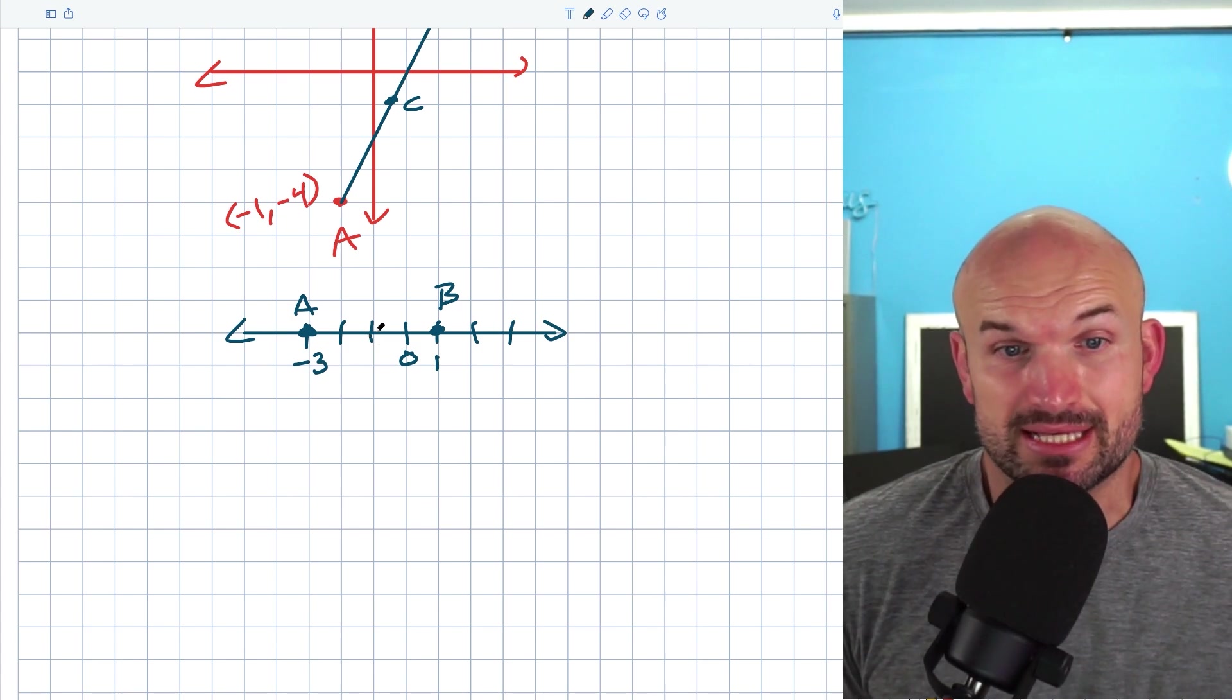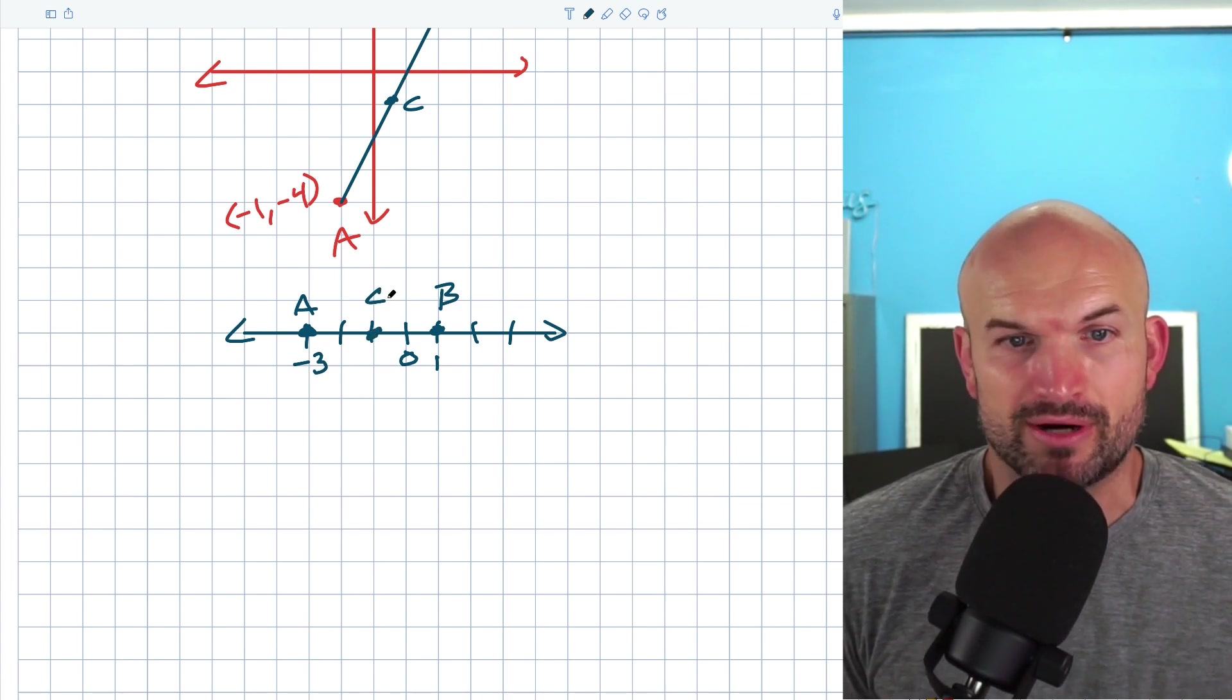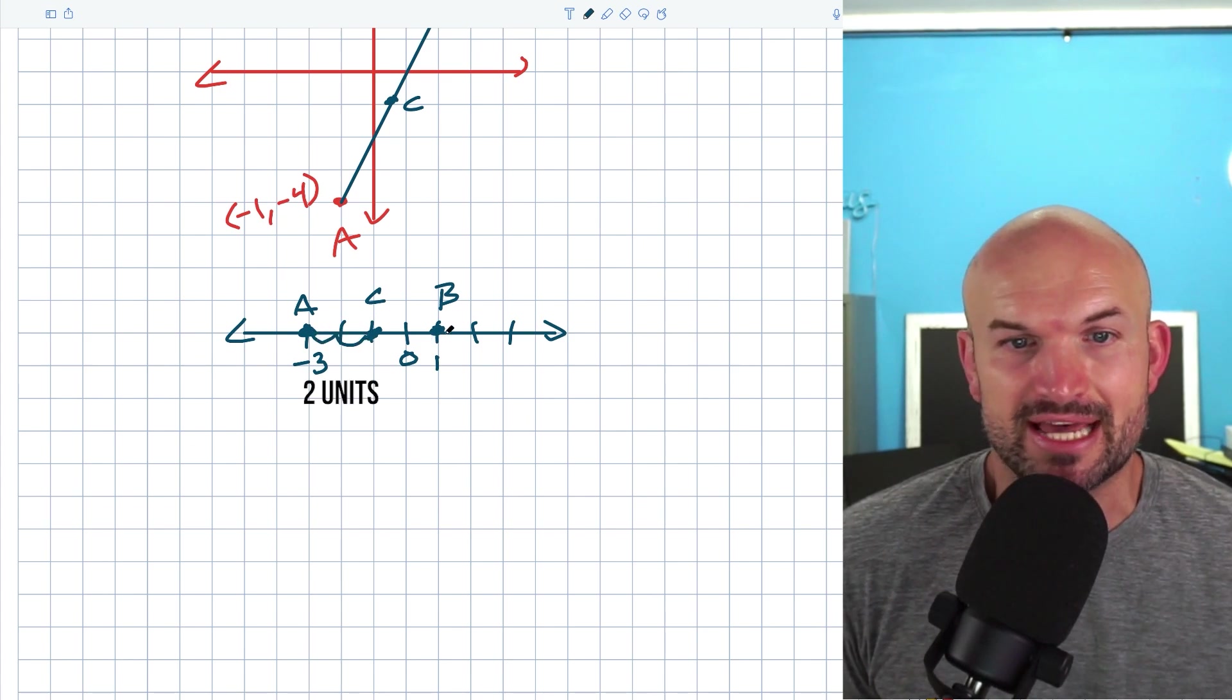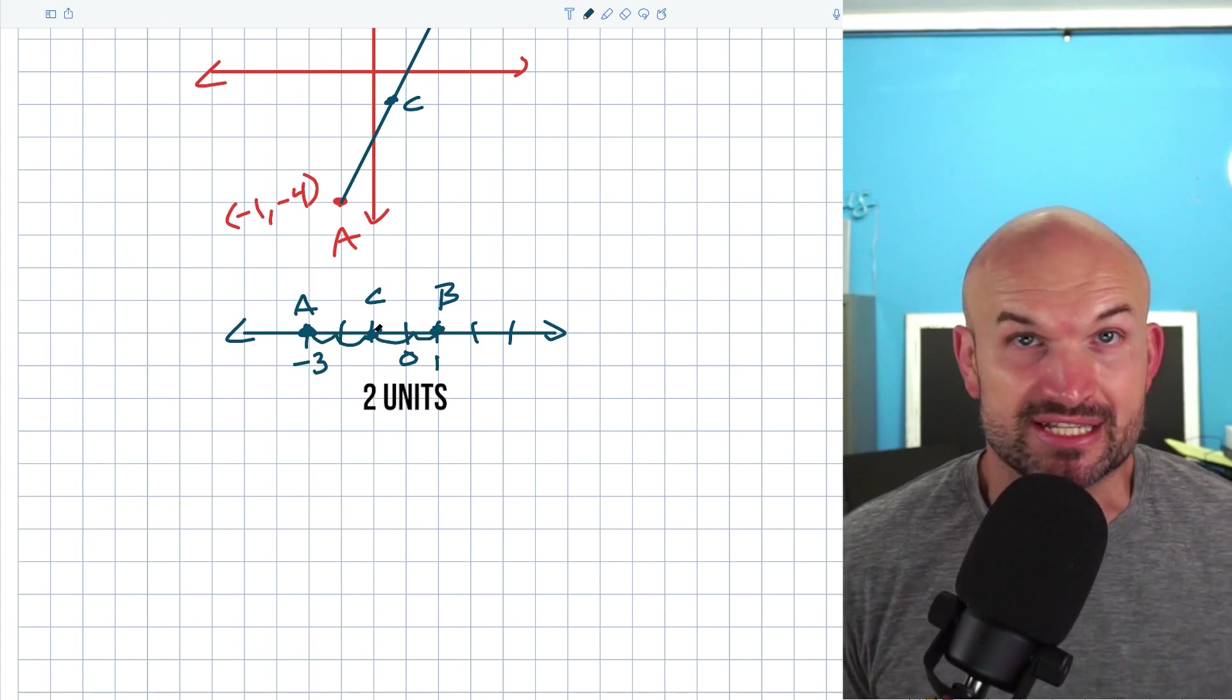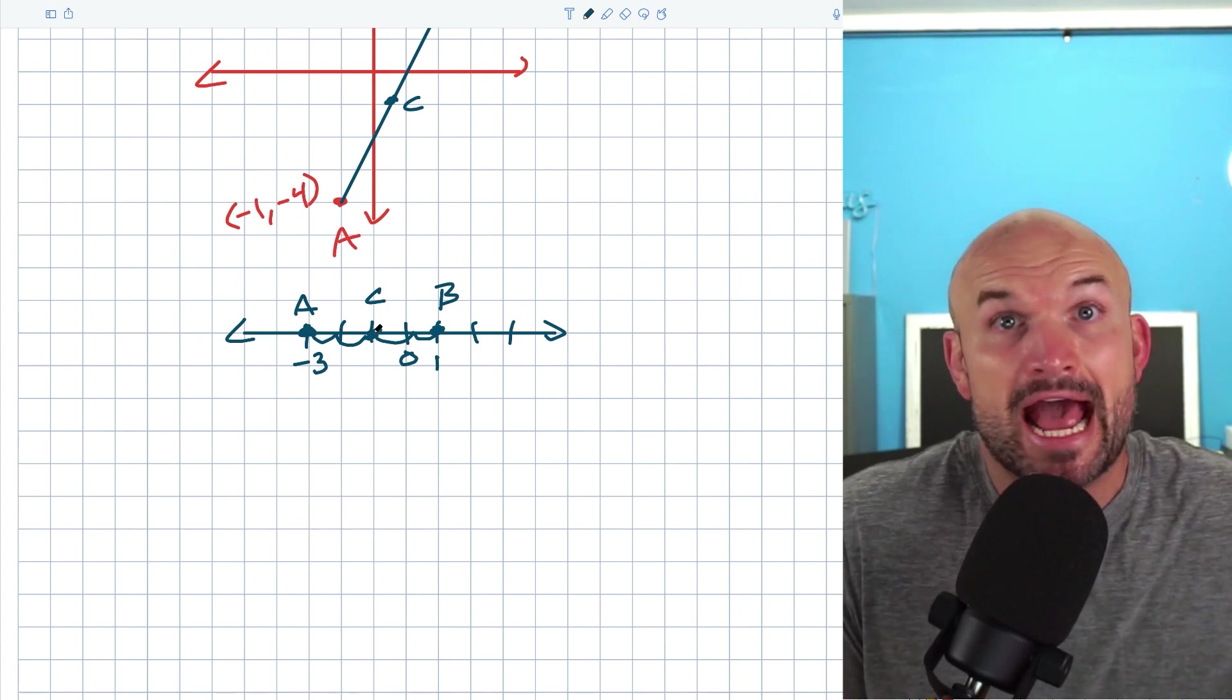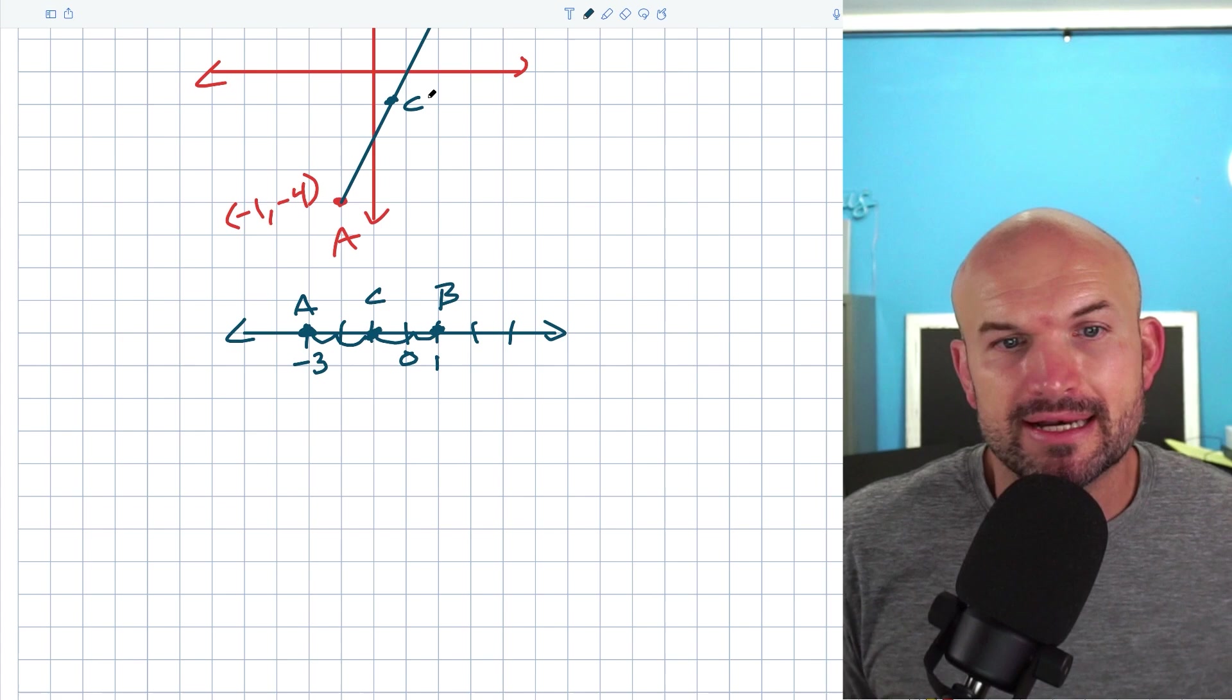Now basically, what we did here is we just want to find the point that's in the middle. Now, you could probably say, oh, that's the point right here. And the reason why it's in the middle is because the distance from A to C is two units, and the distance from B to C is going to be two units. It doesn't matter if it's positive or negative direction. We just know the distance, the absolute value is going to be two.